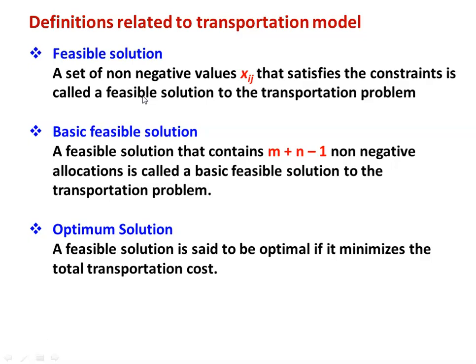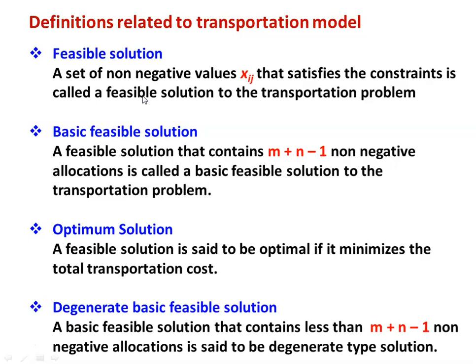Optimum solution: once you have the basic feasible solution, you must optimize it. The feasible solution is said to be optimal if it minimizes the total transportation cost — that is, when the cost is at its minimum. Degenerate basic feasible solution: if you have less than m+n−1 non-negative allocations, it is called a degenerate type of solution. Such problems also need to be optimized.